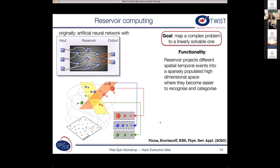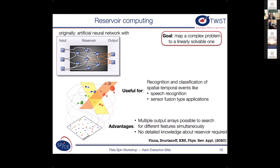So what is it useful for? So we can use it for the classification of spatial temporal events, for example speech recognition or sensor fusion type of applications, for example when your car has different sensors and you need to fuse these signals to understand that the pedestrian is coming from the right or so. What are the advantages of reservoir computing? So first of all we can train for multiple features simultaneously.